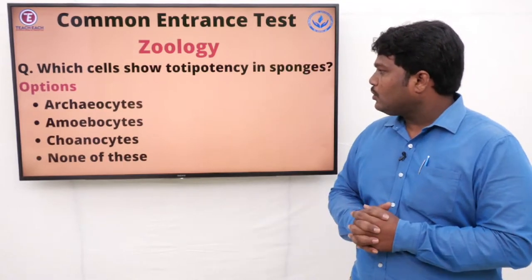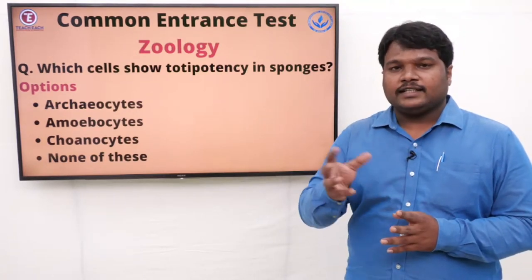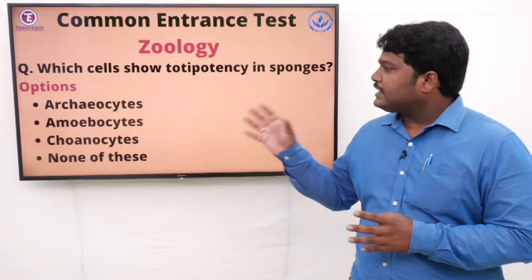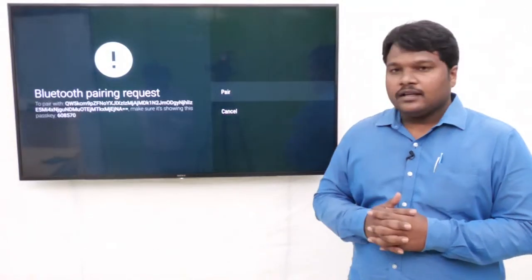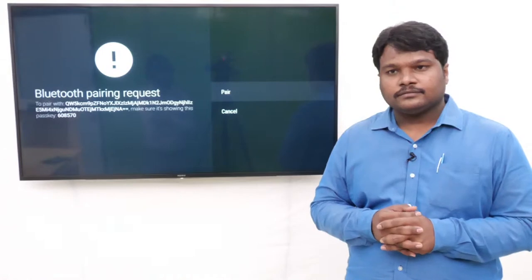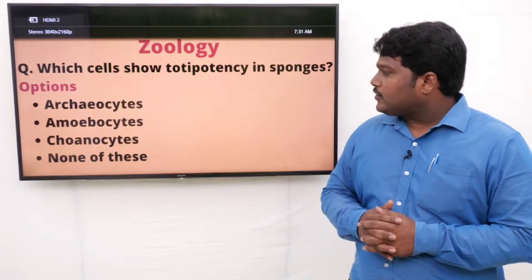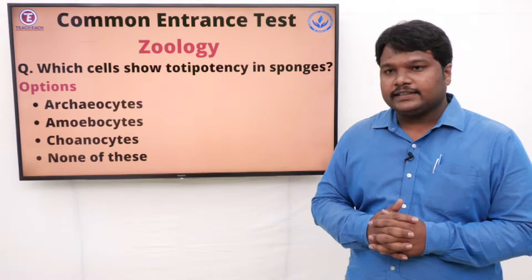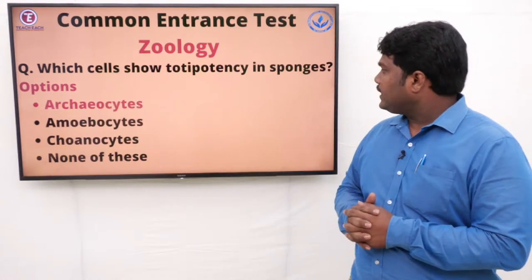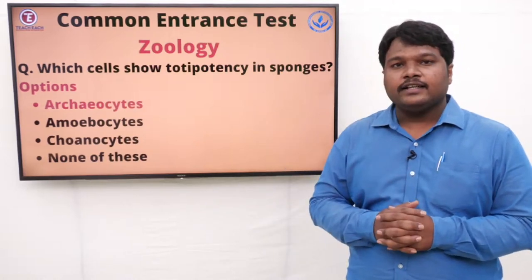Question 5: Which cells show totipotency in sponges? In sponges there are different cells — cell is the structural and functional element of a living organism. Options: A) Archaeocytes, B) Amoebocytes, C) Choanocytes, D) None of these. The answer is archaeocytes. Archaeocytes are the cells which are present in sponges that show totipotency.